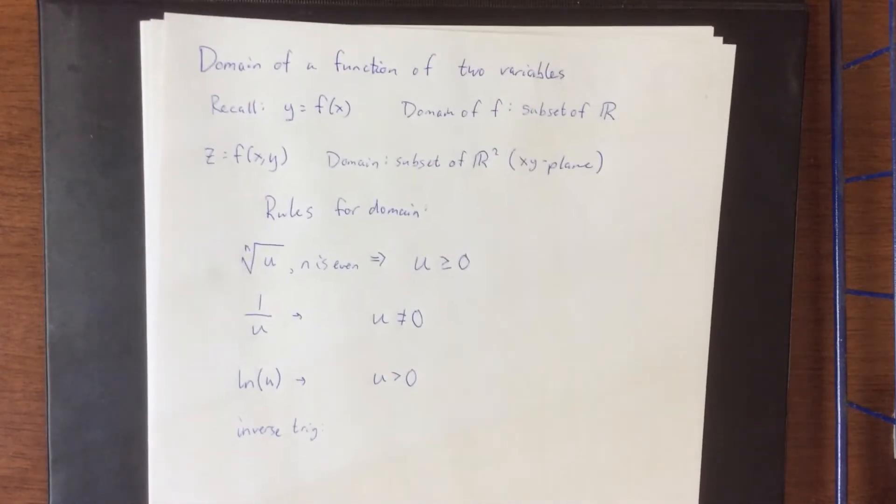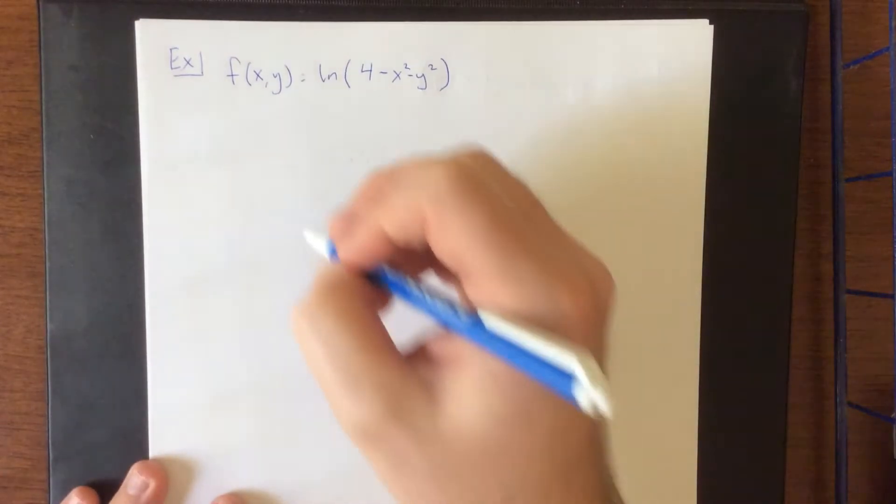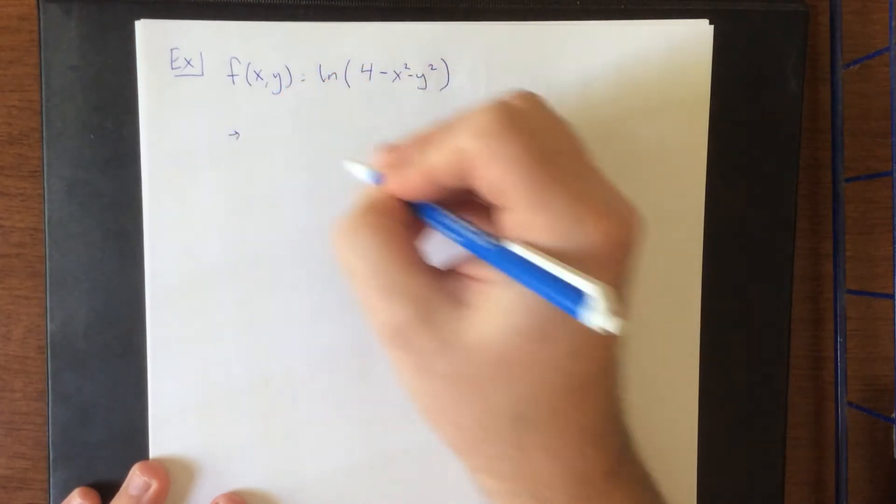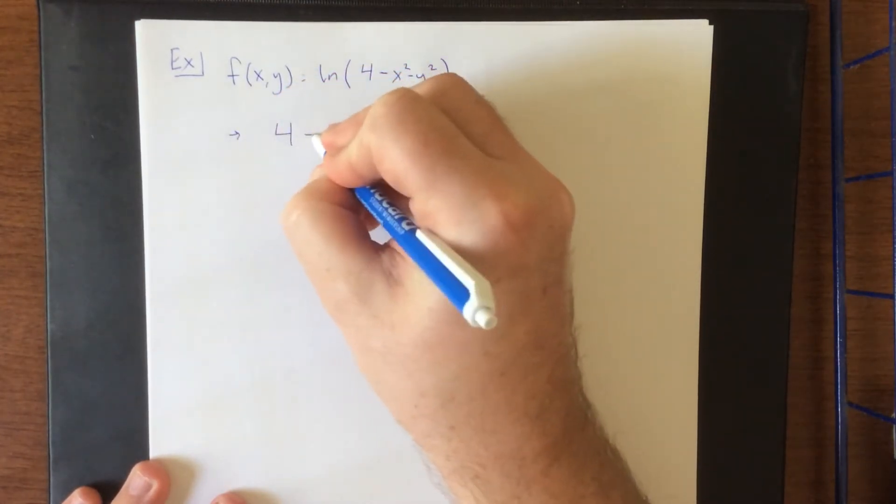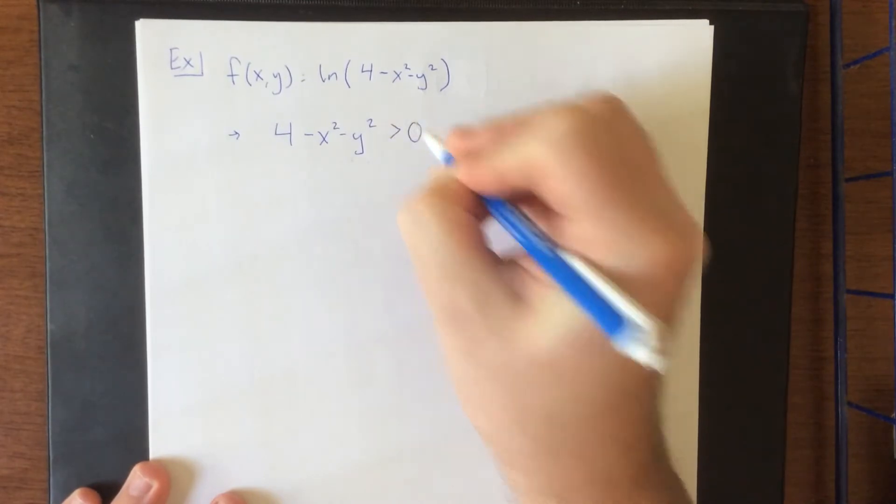So I wanted to work through a couple of examples of finding domains of functions of multiple variables. So we'll start here. F of x,y is equal to the natural log of 4 minus x² minus y². So with that in mind, we do have a natural log involved. So that means that the thing inside the natural log, 4 minus x² minus y² is going to have to be greater than zero.